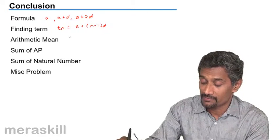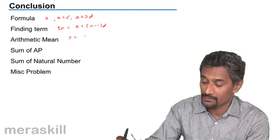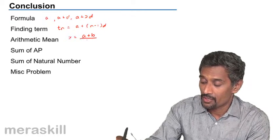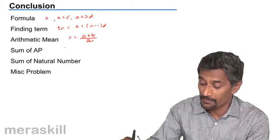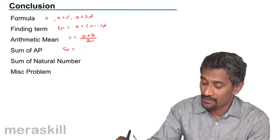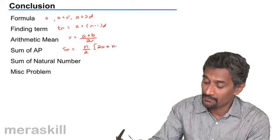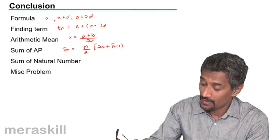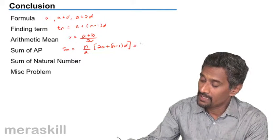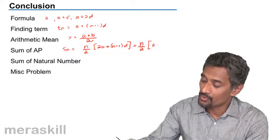Arithmetic mean problem, where the middle term is the average of the extremes. Sum of AP is Sn = n/2(2a + (n-1)d), as well as n/2(a+l).